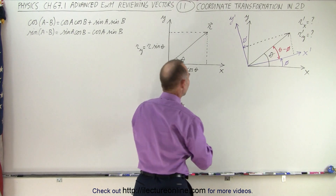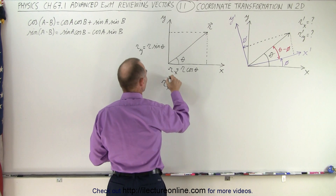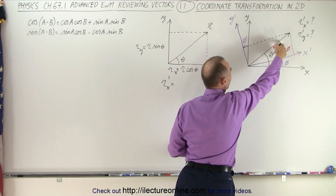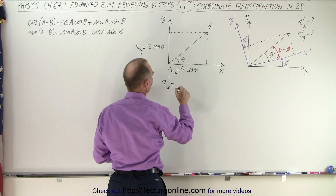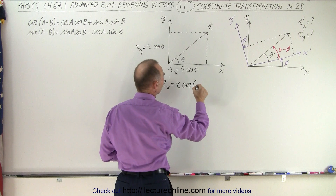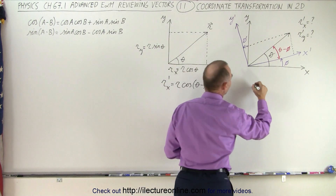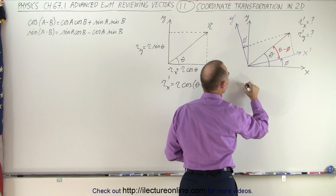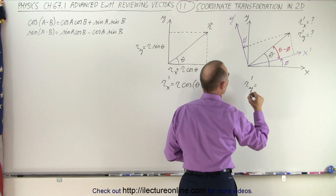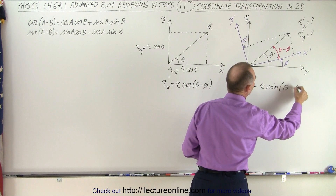So this is how we do that. First of all, we're going to write that R sub X' prime is going to be equal to — notice the angle between the vector and the axis is theta minus phi. So this becomes R, the magnitude of R, times the cosine of the difference of those angles, theta minus phi. And then we can define the Y component, R sub Y', in the new coordinate system, which is going to be equal to R times the sine of theta minus phi.